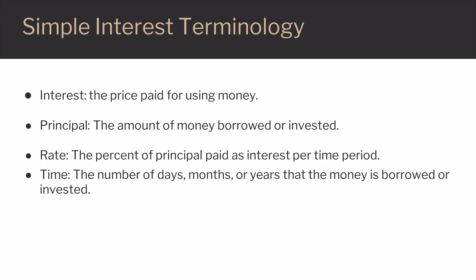Principal is the amount of money borrowed or invested — the dollar amount that you borrow or invest. Rate is the percent of principal paid as interest per time period; in other words, the interest rate you are either paying on a loan or earning on an investment. Time is the number of days, months, or years that the money is borrowed or invested.